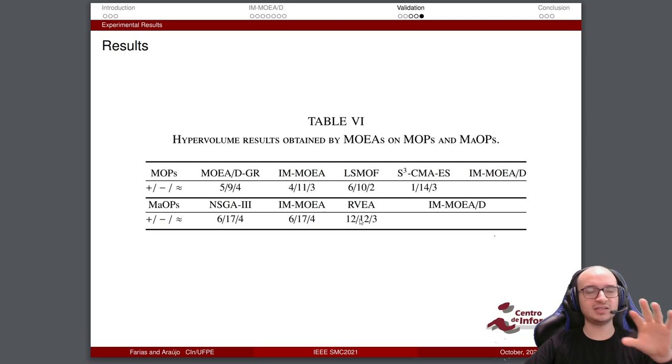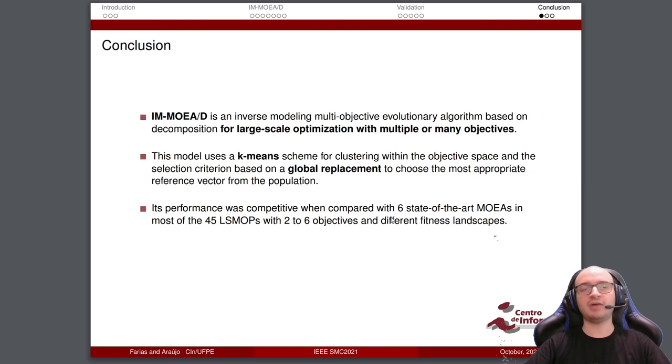What in this case is that before we have one draw, now we have three draws. It's similar, but in different cases, the methods are applied. The conclusion: The proposed method IM-MOEA-D is an inverse modeling multi-objective evolutionary algorithm based on decomposition for large-scale optimization with multiple or many objectives. This model uses a K-means scheme for clustering within the objective space and the selection criterion based on global replacement to choose the most appropriate reference vector from the population. Its performance was competitive when compared with six state-of-the-art MOEAs in most of the 45 LSMOPs with 2 to 6 objectives and different fitness landscapes.